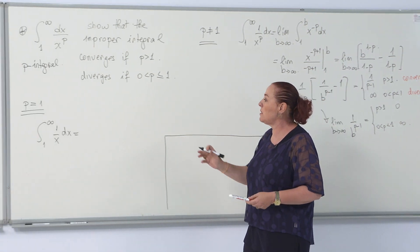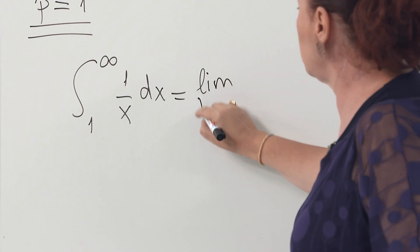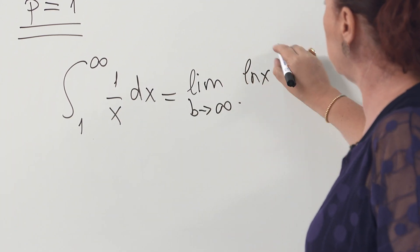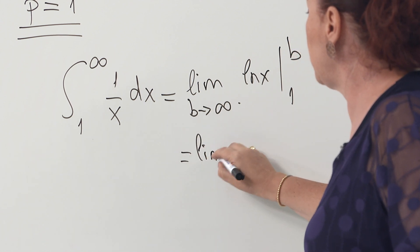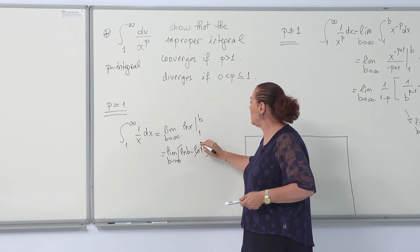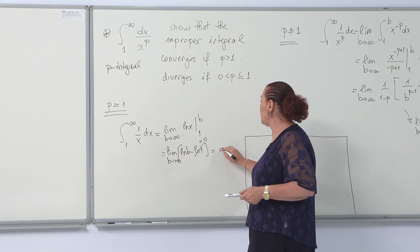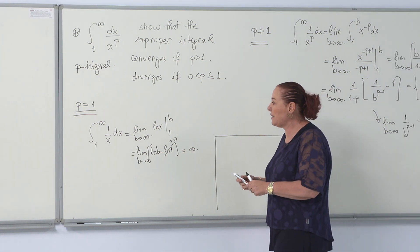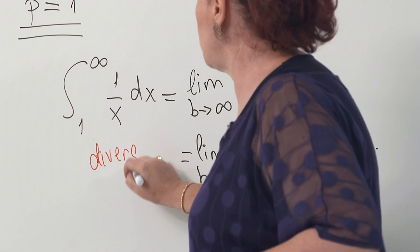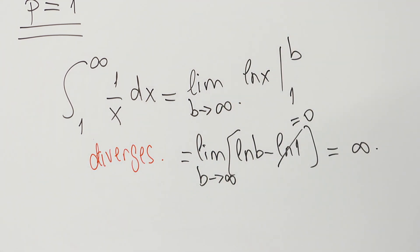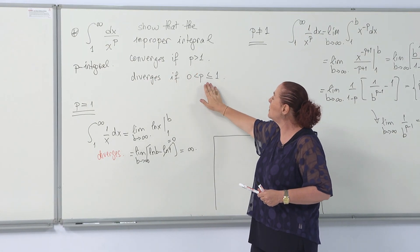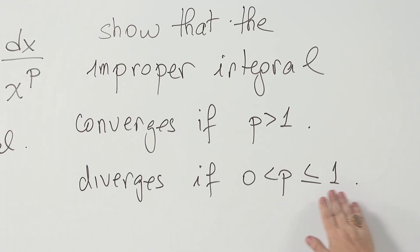In the case where p equals 1, we already saw this example: the integral of 1 over x is ln x, evaluated from 1 to b. The limit as b tends to infinity of ln b minus ln 1 equals infinity, since ln 1 is 0. So when p equals 1 the improper integral diverges. To summarize: the p-integral converges if p is greater than 1, and diverges if p is between 0 and 1.